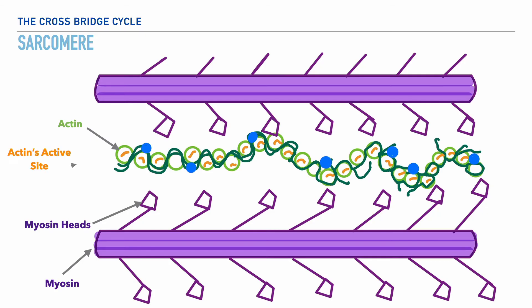Interwoven within the actin filament is another thin filament called tropomyosin, shown here in dark green. And lastly, we also have our third and final thin filament called troponin.